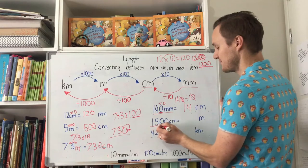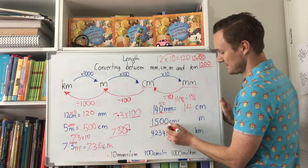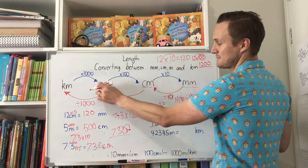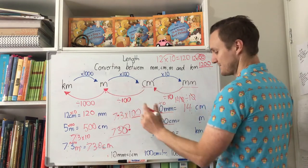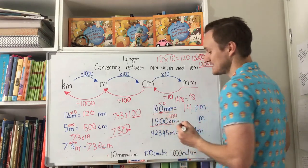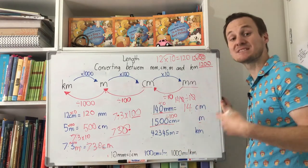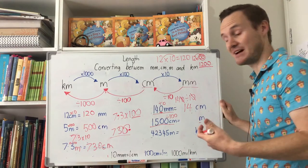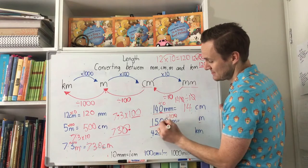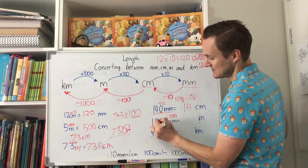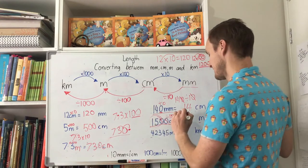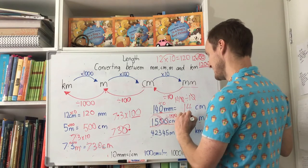If you've got 1500 centimetres into metres — centimetres to metres means we divide by 100. These zeros cancel each other out: cross those zeros out and those zeros out, and the answer becomes 15 metres.